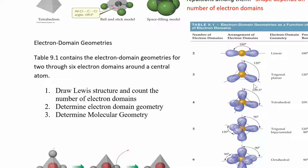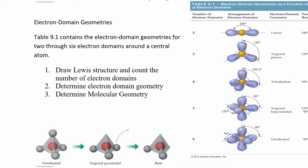Tetrahedral means you have four electron domains. You might wonder why it's not 90 degrees — if you only had one plane to work in they'd be 90 degrees, but if you twist them a bit they get further apart, giving bond angles of approximately 109.5 degrees. If you have five electron domains — trigonal bipyramidal — three are in one plane at 120 degrees, like a trigonal planar, plus a linear going up and down, giving angles of 90 degrees in one direction and 120 degrees in that equatorial plane. Trigonal means a triangular base with a pyramid on top and on the bottom.